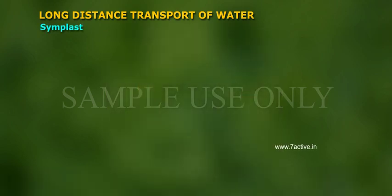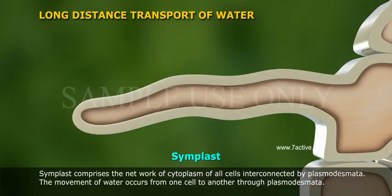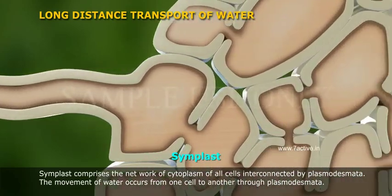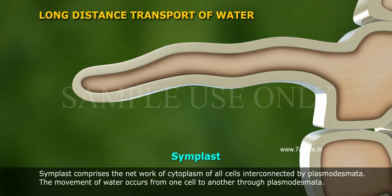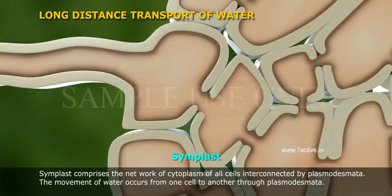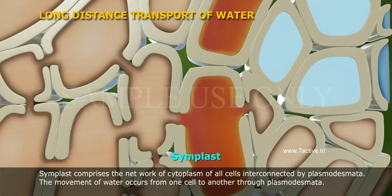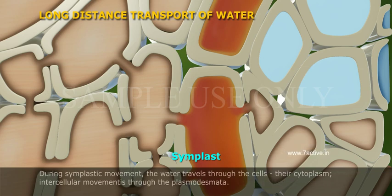Symplast comprises the network of cytoplasm of all cells interconnected by plasmodesmata. The movement of water occurs from one cell to another through plasmodesmata. During symplastic movement, the water travels through the cells and their cytoplasm. Intercellular movement is through the plasmodesmata.